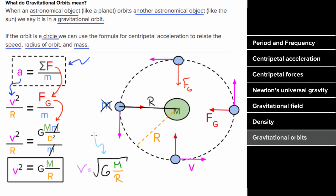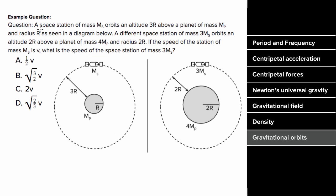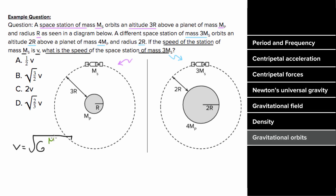Note that this formula does not depend on the mass that's in orbit, since that mass canceled out. So what's an example problem involving gravitational orbits look like? A space station of mass ms orbits at an altitude of 3r above a planet of mass mp and radius r. The center-to-center distance is the planet radius plus the altitude: r plus 3r equals 4r. So the speed of the ms station is the square root of big G times mp over 4r.